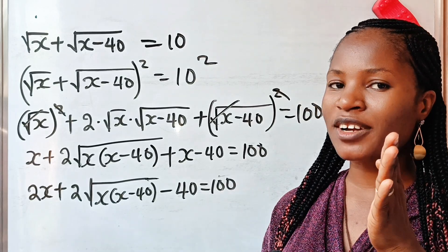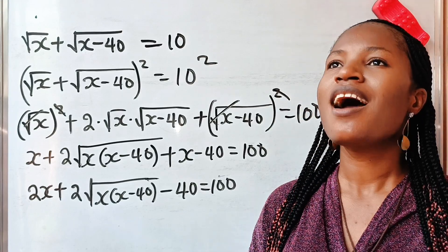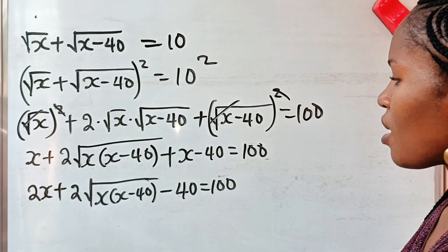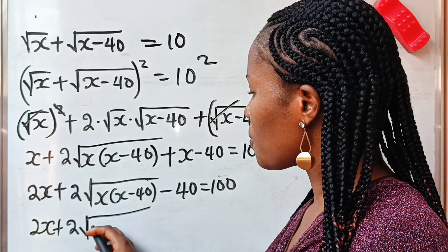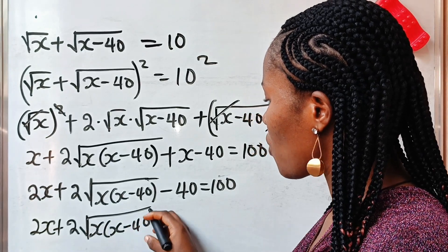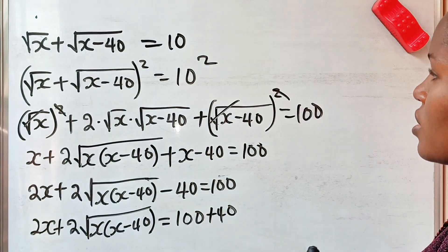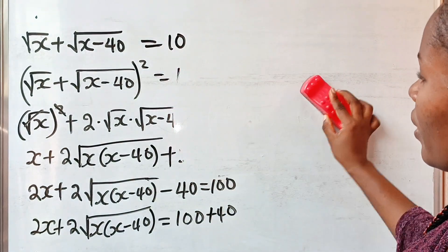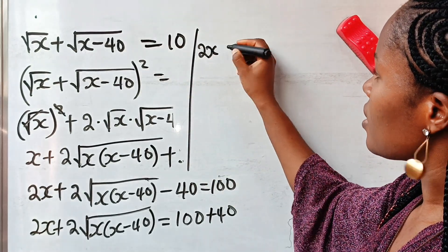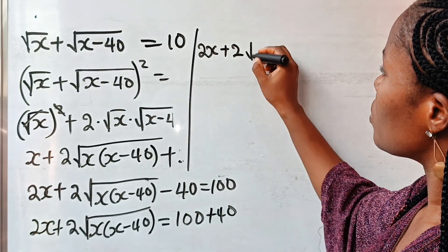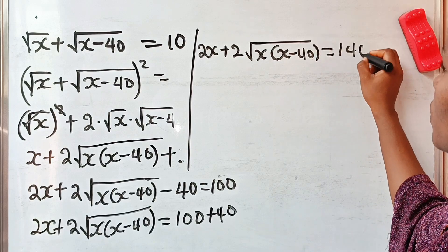Please give me a thumbs up if you are enjoying this video. And if you are a returning subscriber, thank you so much, I appreciate it. Now let us continue. From here, we have 2x plus 2 root of x multiplied by x minus 40, then is equal to 100 minus 40 — which crosses to become plus 40 — giving us 140.